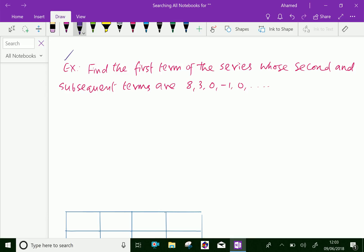Find the first term of the series whose second and subsequent terms are 8, 3, 0, minus 1, and 0. Here in the given data, the initial term is...